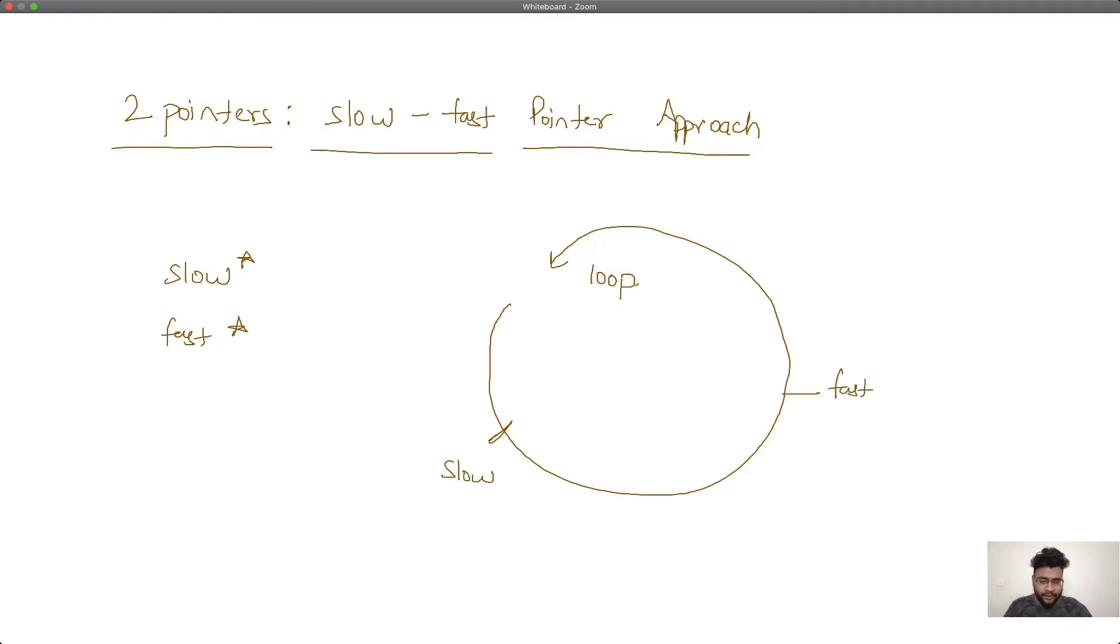The thought process here is that if both are moving at different speeds, then fast would eventually catch up to slow at any given point of time. So, fast equal to slow in this type of problem is inevitable. It will eventually catch up and thus give me a solution.